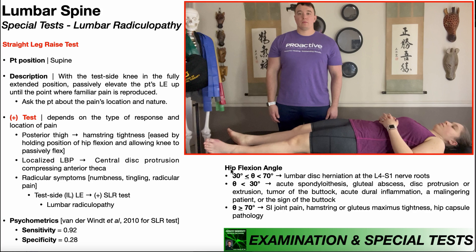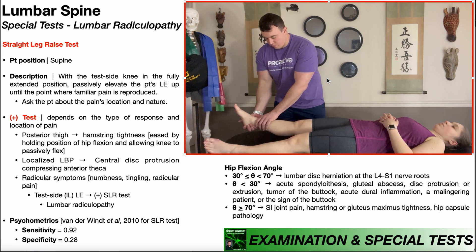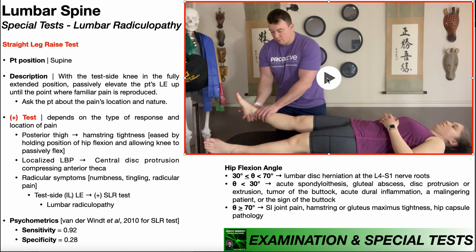The only other thing to cover is the hip flexion angle — the angle of the hip when the patient begins experiencing pain — which can tell us a little about the potential pathology. If the patient begins experiencing pain at an angle less than 30 degrees, this could indicate an acute spondylolisthesis, a gluteal abscess, a disc protrusion or extrusion if severe enough, a tumor of the buttock, acute dural inflammation, a malingering patient, or a sign of the buttock. Very rarely will a patient experience pain at this angle; if it were a disc protrusion or extrusion, it would have to be a very severe one.